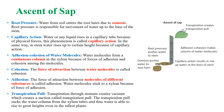Ascent of sap is the upward movement of water and minerals from roots to different parts of the plant. Let us see the different events in ascent of sap. First, root hairs absorb water from soil through osmosis. Root pressure is responsible for the movement of water to the base of the stem. Then, the stem water rises up to a certain height by capillary action. Water molecules form a continuous column in the xylem by adhesion and cohesion forces. The last event in ascent of sap is transpiration pull, which sucks water from xylem tubes and leads to the evaporation of water from the leaves.